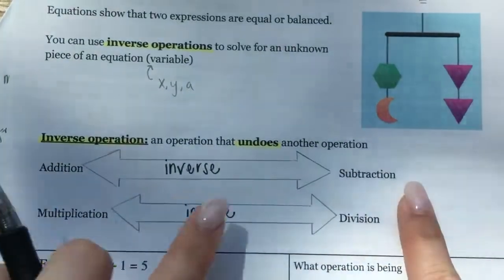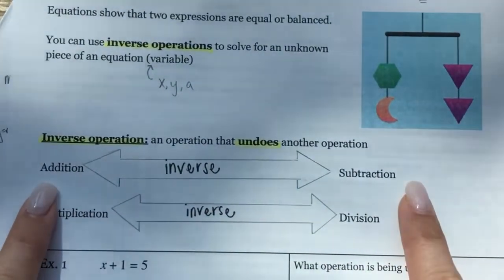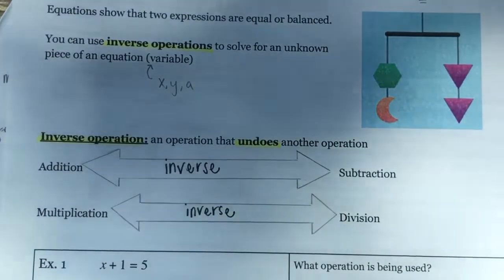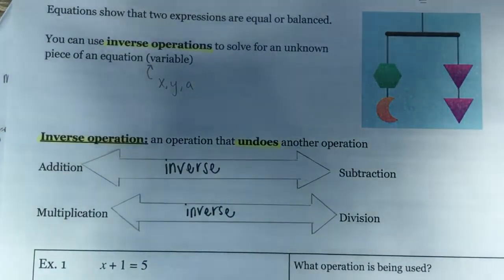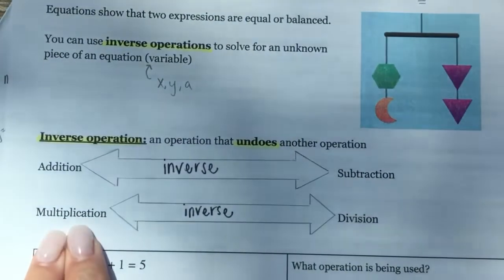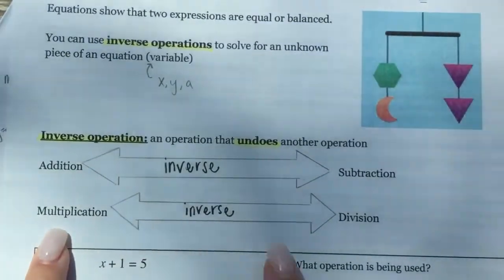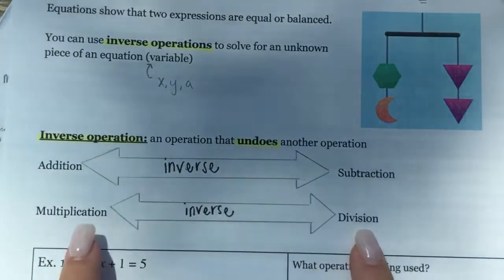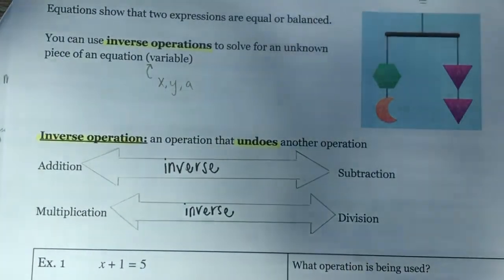The inverse operation of subtraction is addition, because addition adds something and subtraction takes it away — so they reverse each other. For multiplication, the inverse is division, and the inverse of division is multiplication. They undo each other.